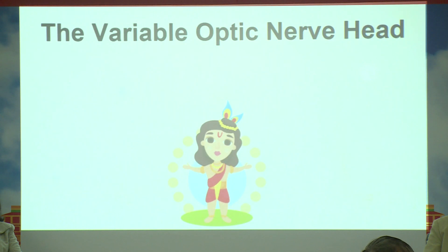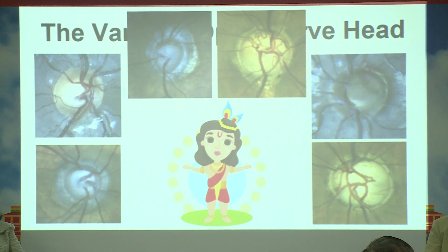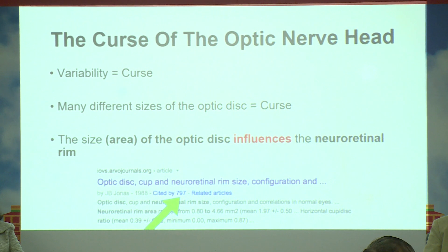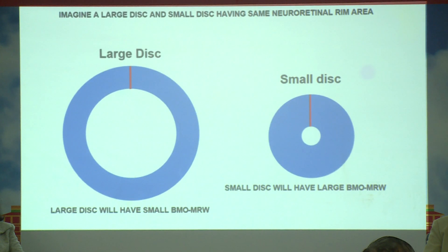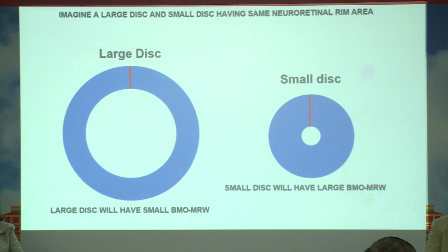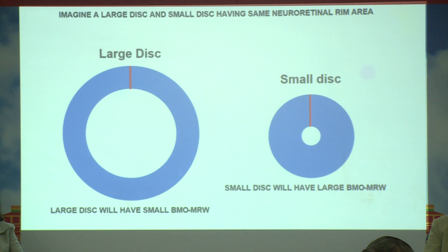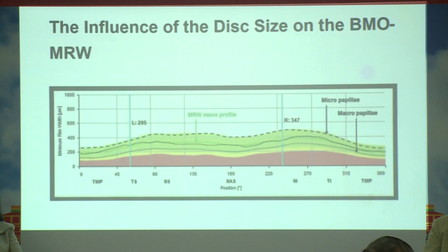Coming back to the basics: every one of us has a different optic disc. The curse is that the size of the optic disc will always influence the neuroretinal rim, because every disc is different. Imagine a large disc and a small disc having the same neuroretinal rim area — both discs look different but have the same neuroretinal rim area. A large disc will always have a smaller BMO-MRW, whereas a smaller disc will tend to have a larger BMO-MRW, even though the neuroretinal rim area is the same.